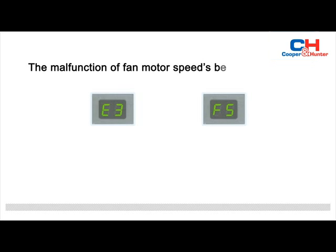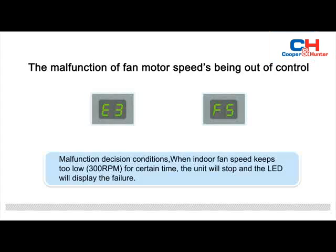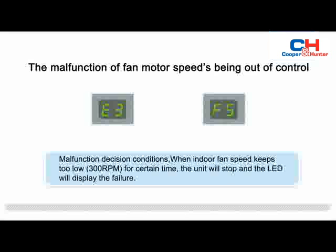When the display board of the indoor unit displays E3 or F5, that indicates the malfunction of fan motor speed being out of control. Malfunction decision conditions: when indoor fan speed keeps too low — below 300 RPM — for a certain time, the unit will stop and the LED will display the failure.